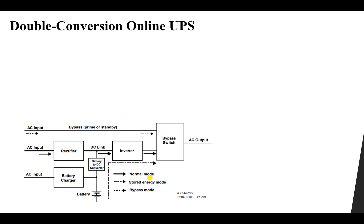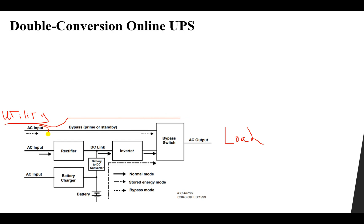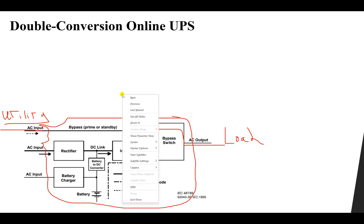The three modes are the normal mode, the stored energy mode, and the bypass mode. As you can see, we have the utility AC power here and our load. Between them we have the UPS system. The first mode is the bypass or standby mode, in which we take the input as-is and bypass it to the output. This is used in case of maintenance or any problem inside the UPS.